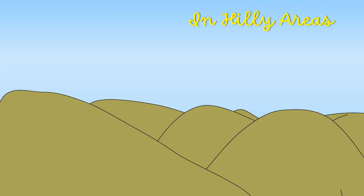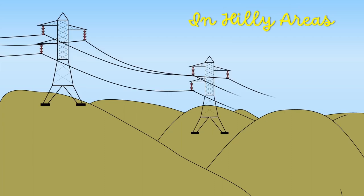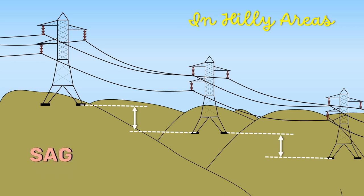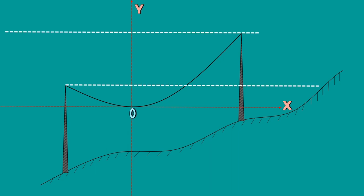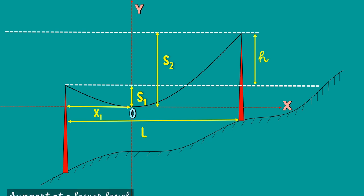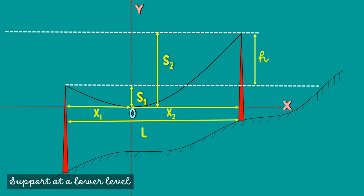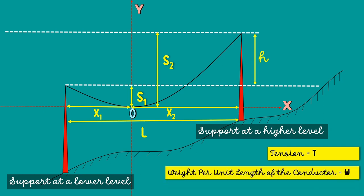In hilly areas, we generally come across conductors suspended between supports at unequal levels. Now, let's calculate the sag in this case. Let the lowest point on the conductor be O. S1 and S2 are the sags. L be the span. H is the difference in level between two supports. X1 is the distance of support at the lower level from O and X2 is the distance of support at higher level from O. T is the tension in the conductor and W is the weight per unit length of the conductor.